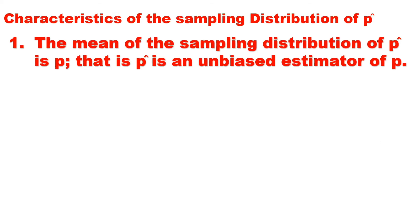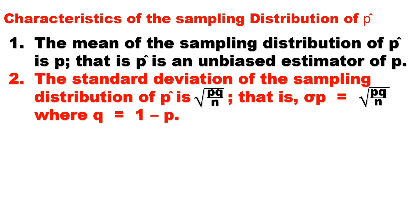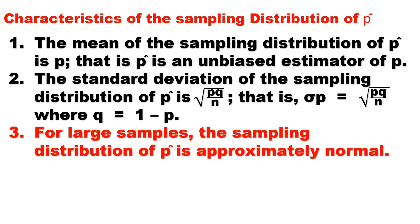Let us also talk about the characteristics of the sampling distribution of P-hat. Number one, the mean of the sampling distribution of P-hat is P — that is, P-hat is an unbiased estimator of P. Number two, the standard deviation of the sampling distribution of P-hat is the square root of PQ over N, where Q equals 1 minus P. And number three, for large samples, the sampling distribution of P-hat is approximately normal.